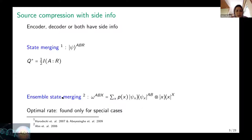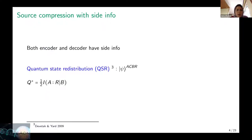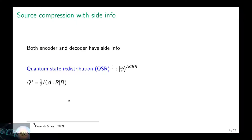Ensemble state merging was studied by Anethel in 2006. They considered an ensemble of pure states shared between Alice and Bob but could not find the optimal compression rate — they only showed it for some special cases. The most general case for pure states is quantum state redistribution, where both encoder and decoder have access to side information. Here C is the side information of the encoder and B is the side information of the decoder. This work is due to Devetak and Yard in 2009, who showed that the optimal quantum compression rate is equal to the conditional mutual information given the side information at the decoder.